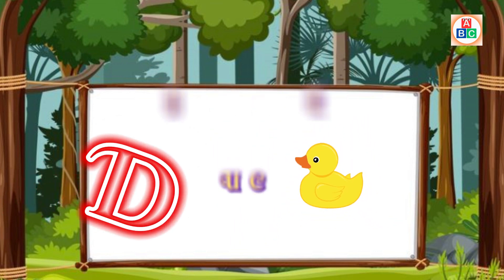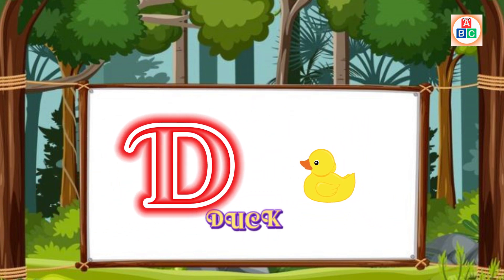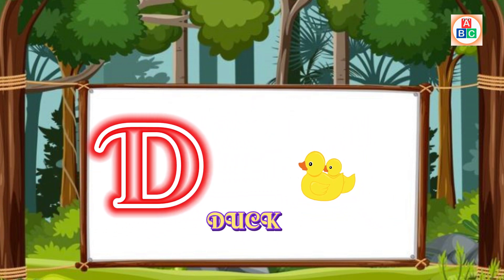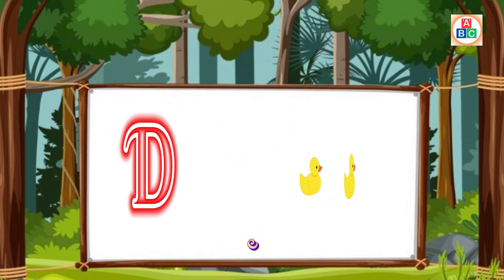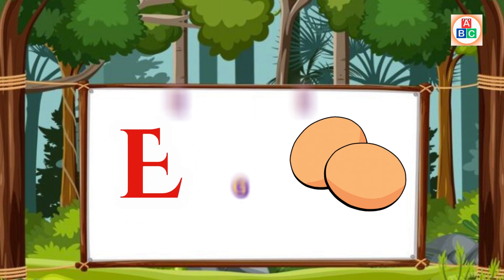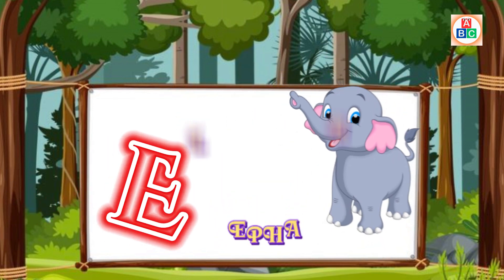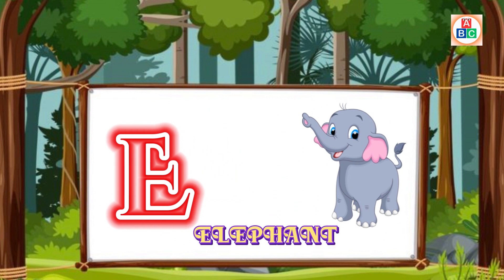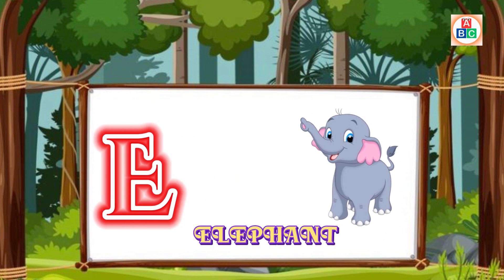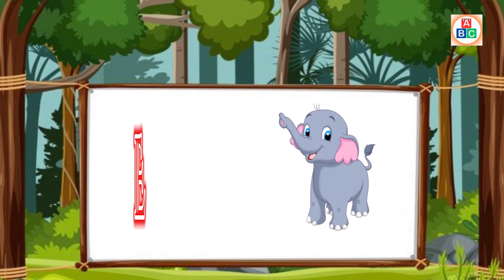D is for Duck. D. D. Duck. E is for Egg. E. E. Egg. E is for Elephant. E. E. Elephant.